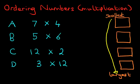Well, the first stage is to work out the answers to each of the problems. So let's do that. We'll start right at the top. 7 times 4. You should know this by your 4 times table or the 7 times table. The answer is 28.